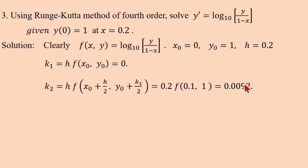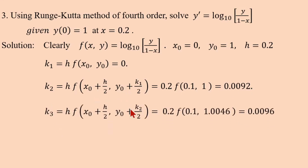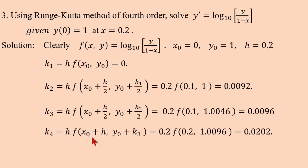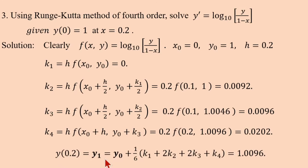Divide k2 by 2, add y₀: y-value = 1.0046, x-value = 0.1. k3 = 0.2·log₁₀(1.0046/(1-0.1)) = 0.0096. For k4: x₀ + h = 0.2, y₀ + k3 = 1.0096. k4 = 0.2·log₁₀(1.0096/(1-0.2)) = 0.0202. Substituting into the final formula, y₁ = 1.0096.